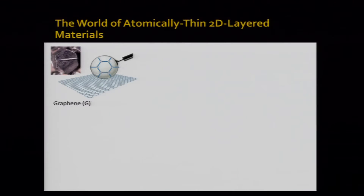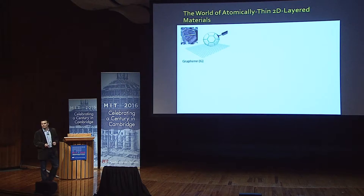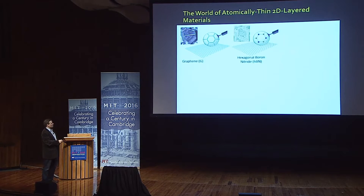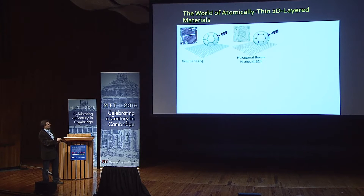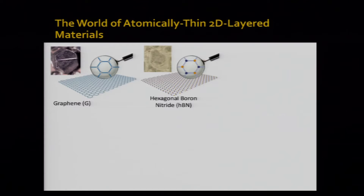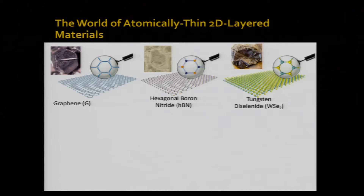The most famous is graphene. It's a single-atom-thick sheet of graphite, a honeycomb of carbon atoms. But there are plenty more materials. For example, hexagonal boron nitride is also a honeycomb of boron and nitrogen atoms — it's an insulator, that's why it's transparent. You also have a large family of materials called transition metal dichalcogenides. One example is tungsten diselenide, where one monolayer is three atoms thick.